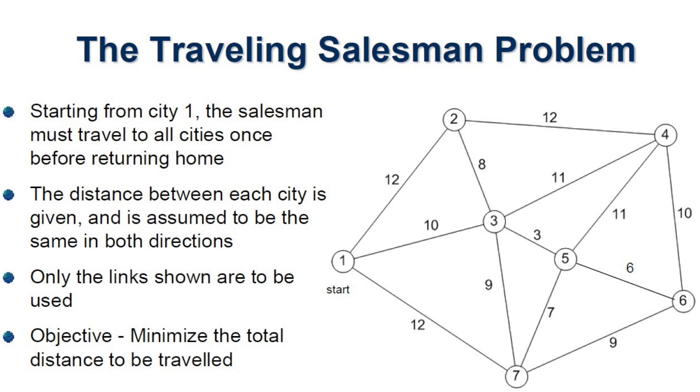Whether P equals NP remains one of the great unsolved questions, and the Travelling Salesman Problem is one of the NP-hard problems. We believe no one will be able to solve it in polynomial time, but if a solution is already found, there exist proofs — a polynomial-time verification algorithm — to verify whether that solution is correct or not.